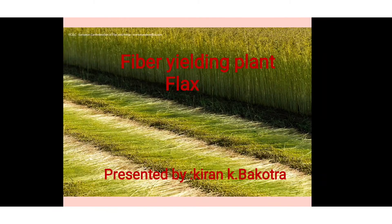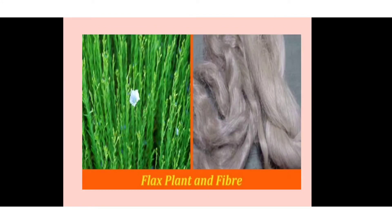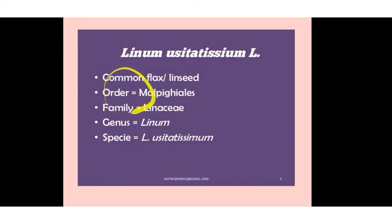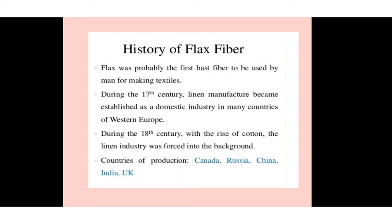This is the flax plant and this is its raw material. The scientific name of flax is Linum usitatissimum — Linum is the genus and usitatissimum is the species. The common names are flax and linen. Flax has two types of uses: as a fiber plant and as a seed plant. The order is Malpighiales, the family is Linaceae, genus Linum, and species usitatissimum.